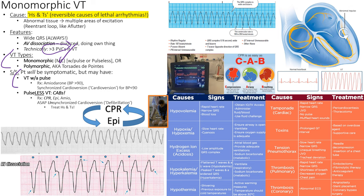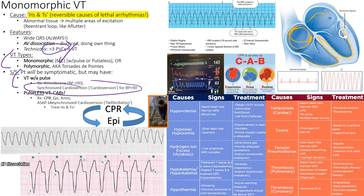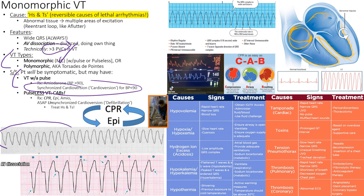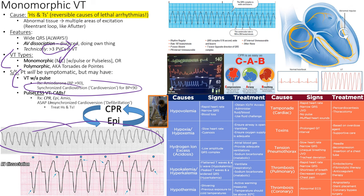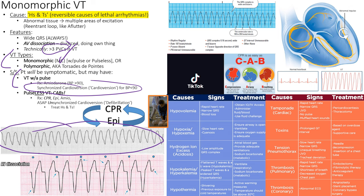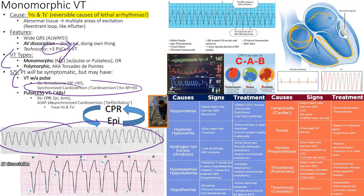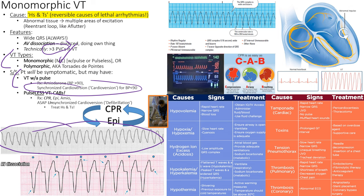If blood pressure is good you can give amiodarone, but if blood pressure is less than 90, amiodarone is contraindicated — you don't give a medication that lowers blood pressure to someone who already has low blood pressure. In that case, you do synchronized cardioversion. For pulseless VT, you change gears entirely — no longer worrying about airway and breathing, only circulation. You maintain circulation with CPR, and try to reboot the heart with epinephrine, which supercharges the heart.